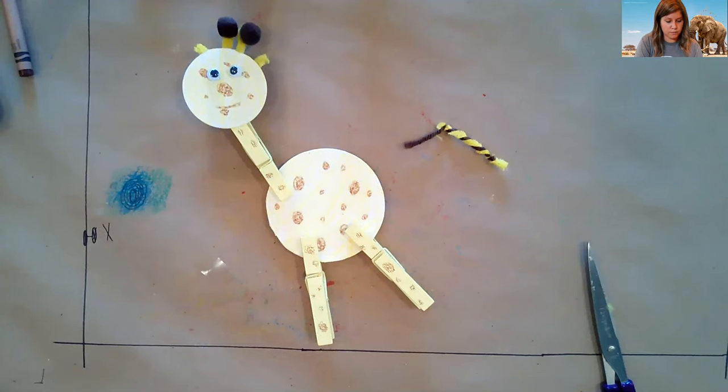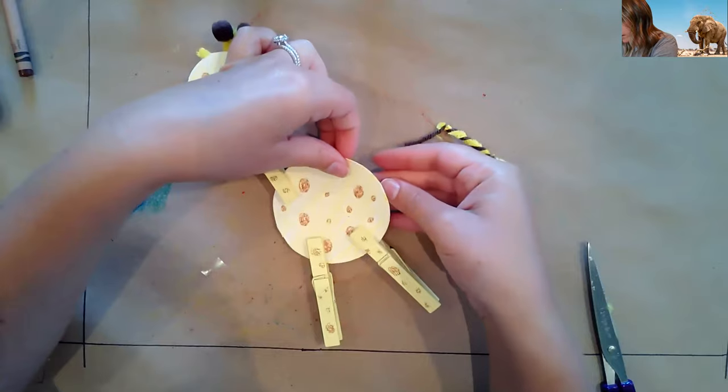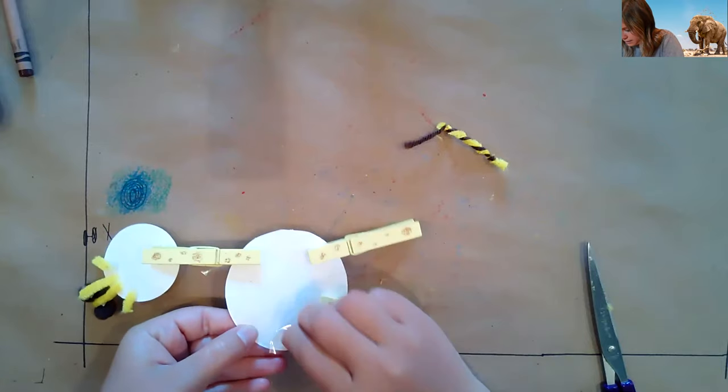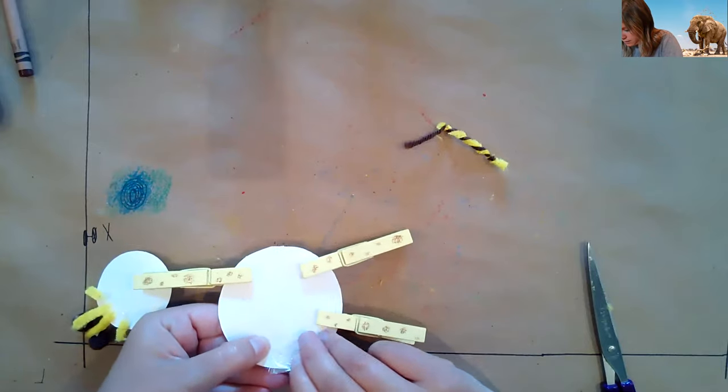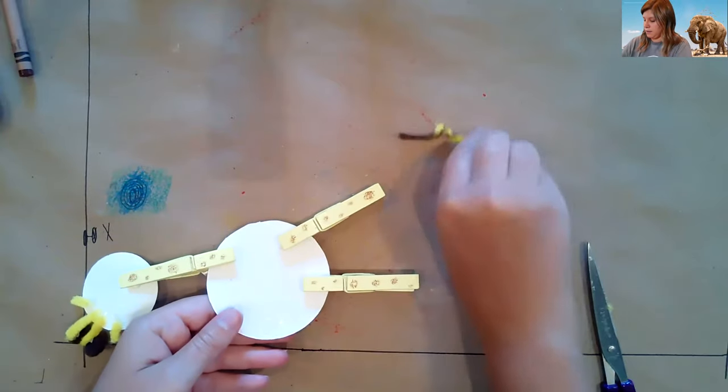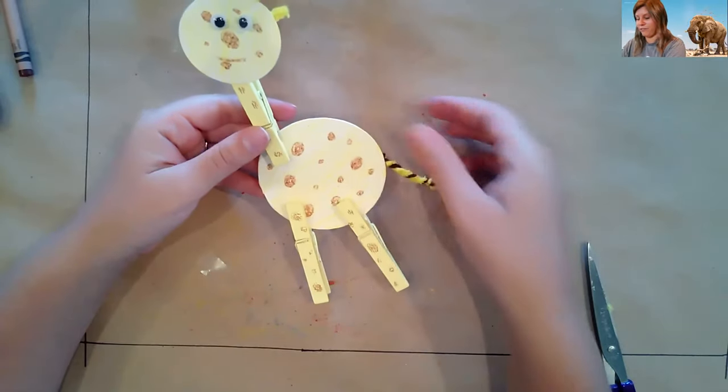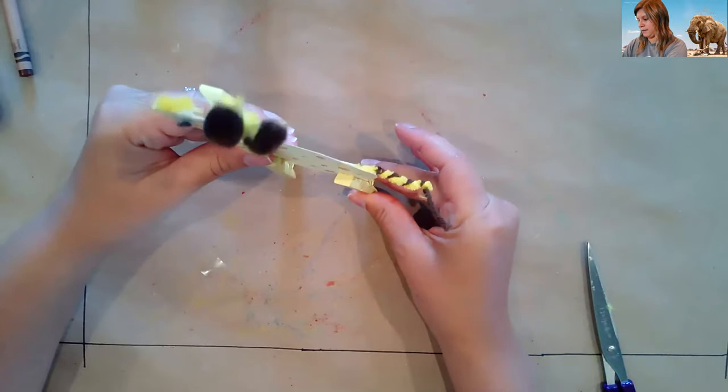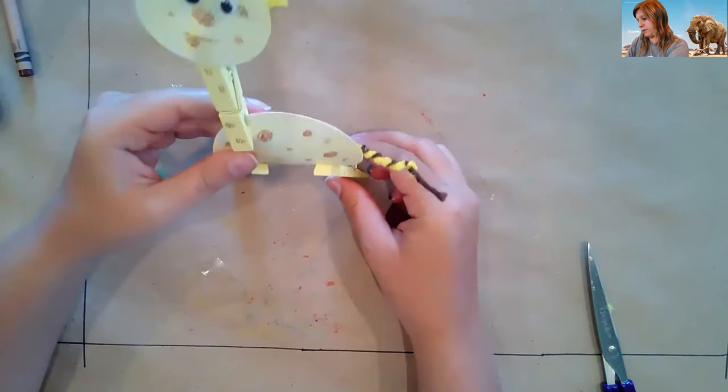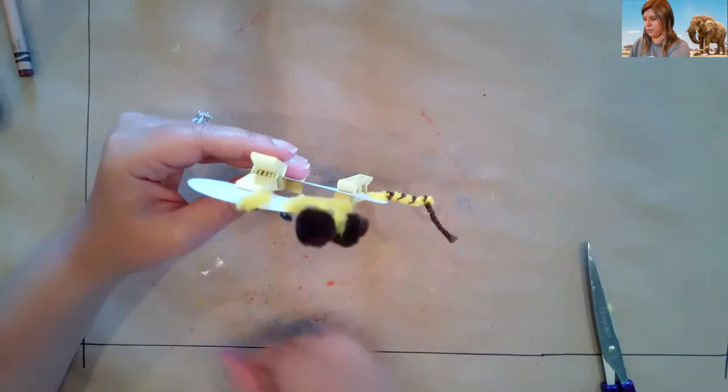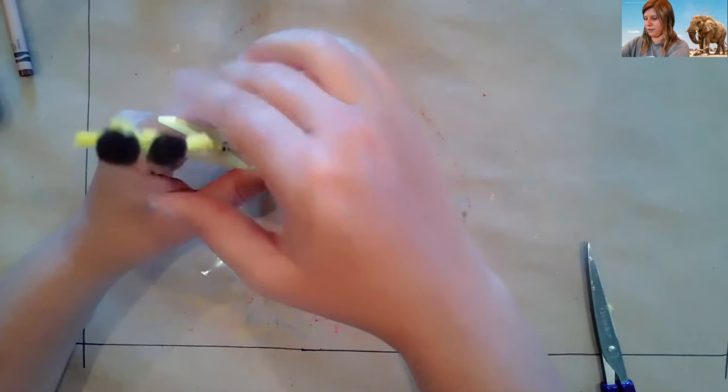We're just going to use a glue dot here to attach his tail. So you're just going to put your glue dot on the underside, just like this and just peel the plastic off. Remember, you may need to use your finger a little bit, just like that. We're just going to stick his tail on and now we have a giraffe. And the cool thing is, if we angle our legs just right, he will stand on his own. Well, my legs aren't angled just right. There we go. Perfect.